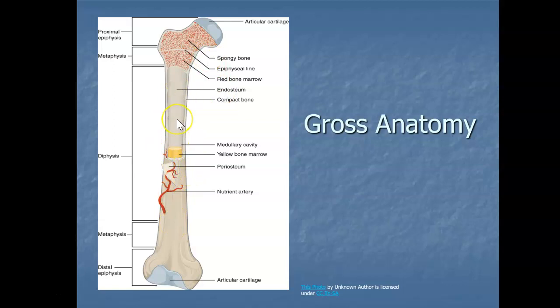The hollow region within the diaphysis is called the medullary cavity, and this is filled with yellow bone marrow, which is responsible for making lipids. The walls of the diaphysis are composed of dense, hard compact bone. We'll talk about the difference between compact bone and spongy bone a little bit later in this video.